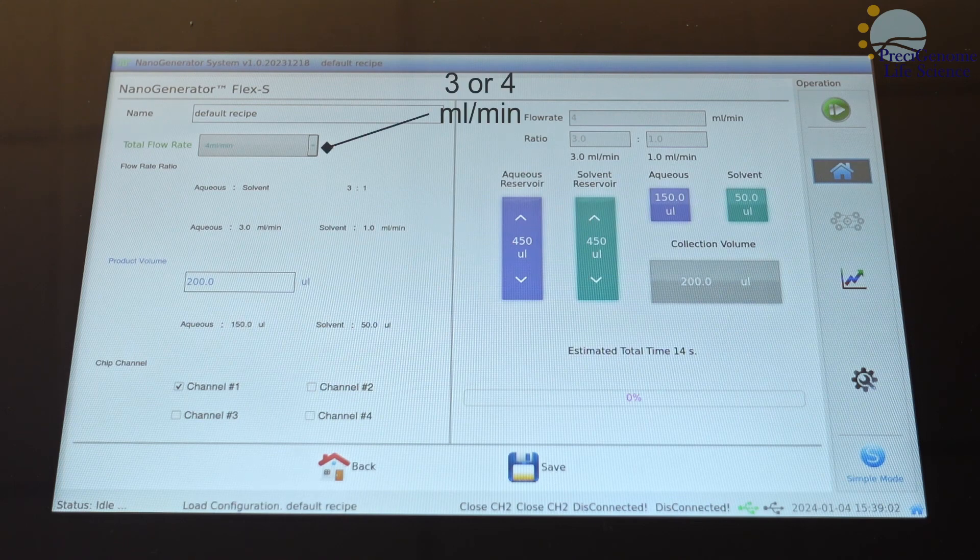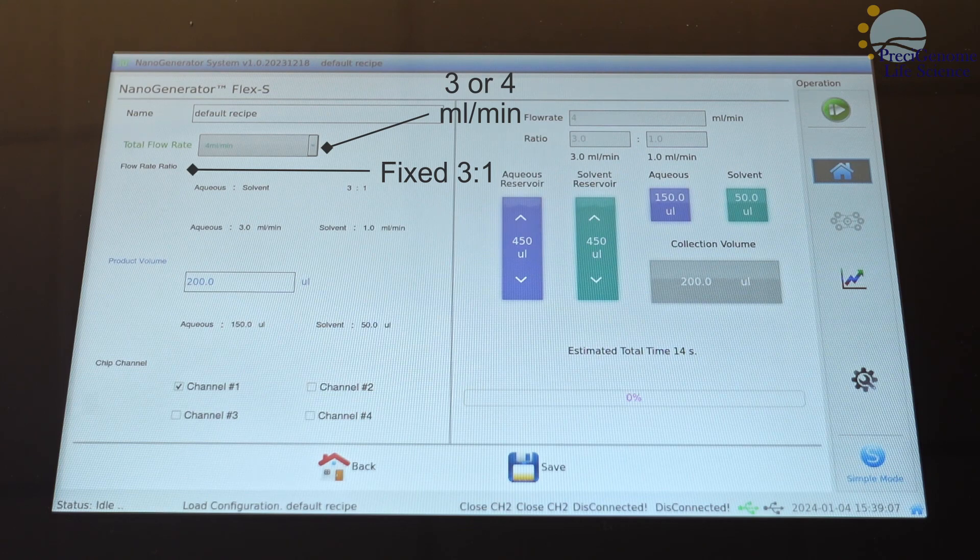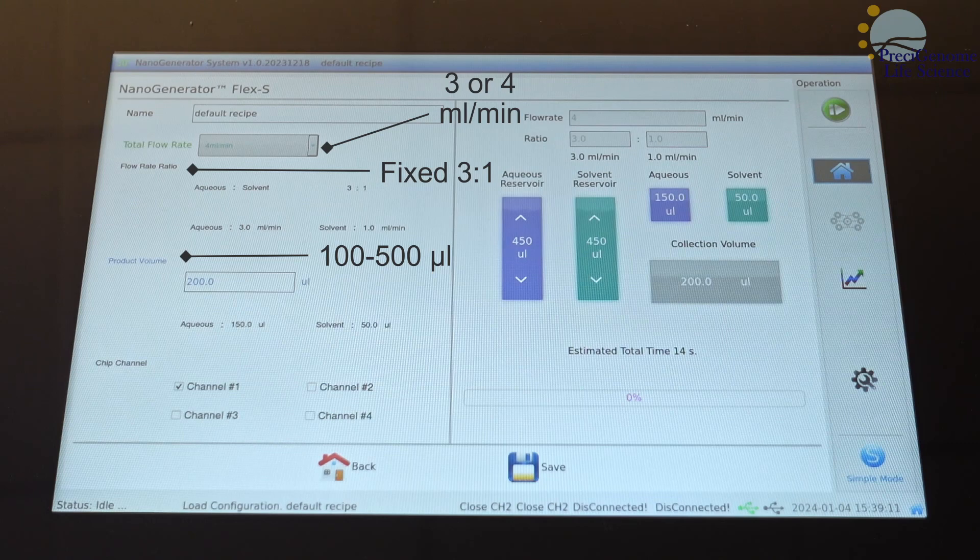The total flow rate may be set to 3 or 4 mils per minute, while flow rate ratio is fixed at 3 to 1. The total volume may be set up to 500 microliters.